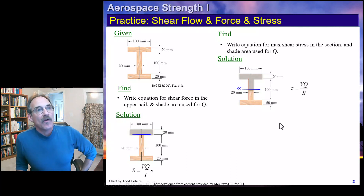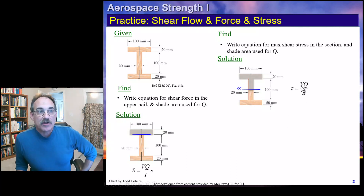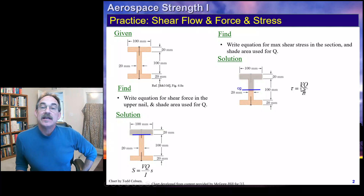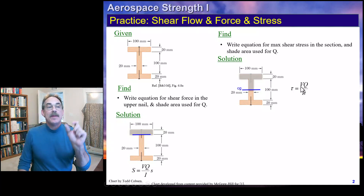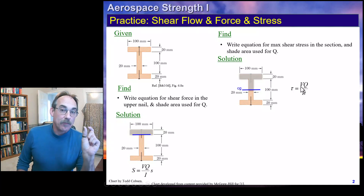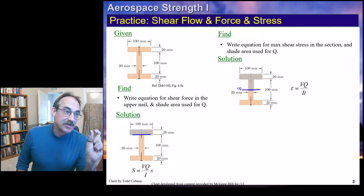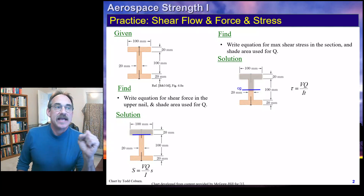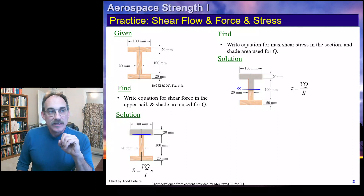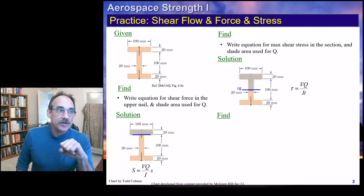To get the shear flow, we use VQ/I, and to get the shear stress we divide by the perpendicular width — the width perpendicular to the action of the shear force — which is that web thickness of 0.02 meters.